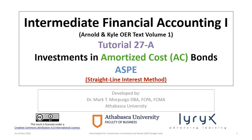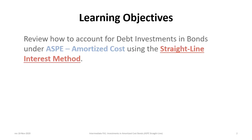Hello and welcome to Intermediate Financial Accounting 1 Tutorial 27A on accounting for investments in amortized cost bonds, or AC bonds, under ASPE using the straight line interest method. There is one learning objective for this tutorial: to review how to account for investments in bonds under ASPE amortized cost using the straight line interest method.